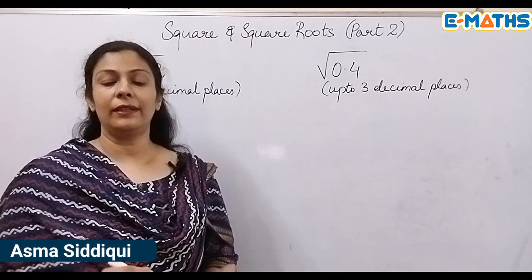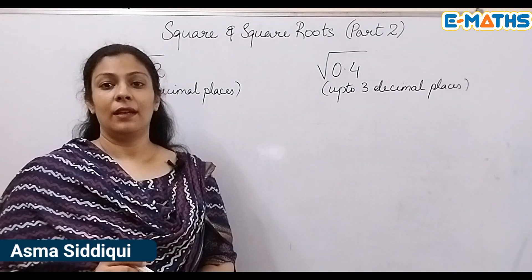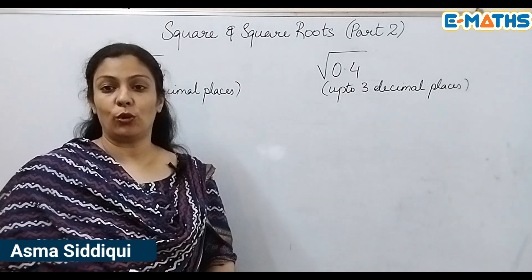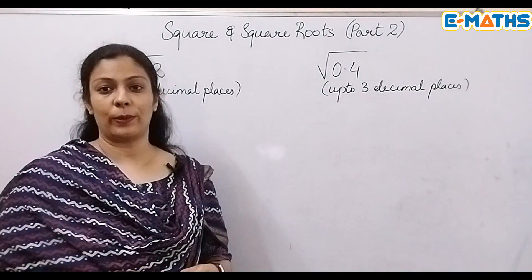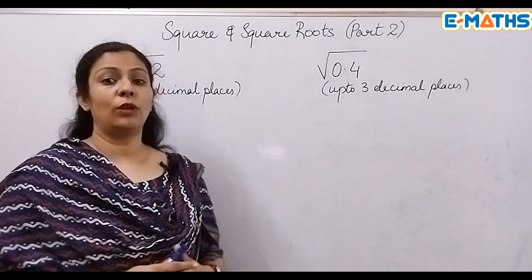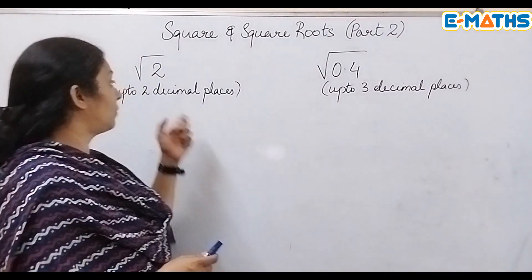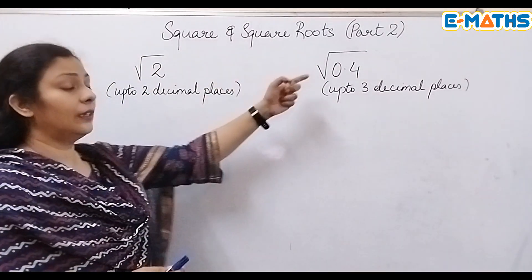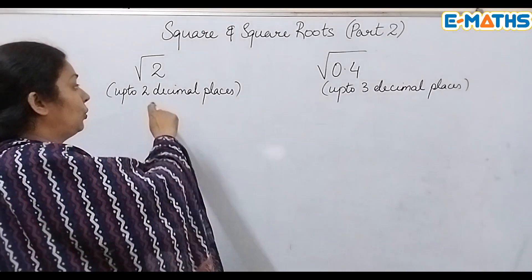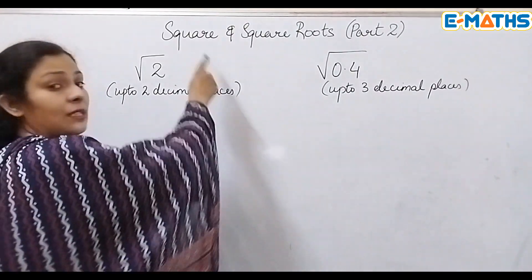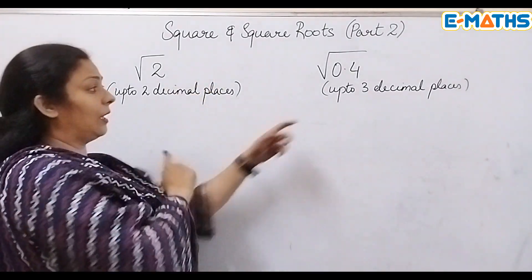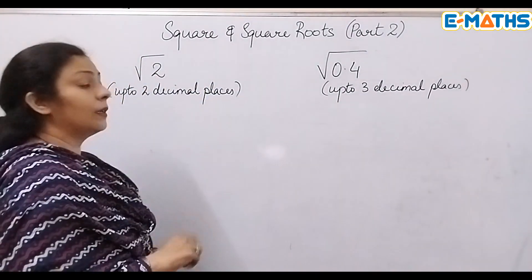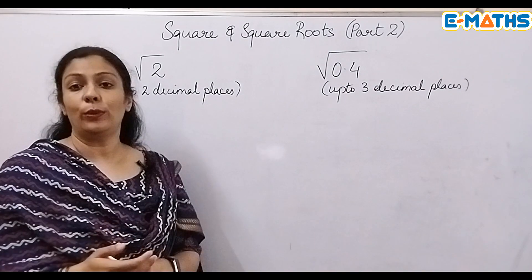Hello and welcome back to my channel EMATS. Today I have Part 2 of Square and Square Roots, where I'm going to tell you how to find square roots of a single digit number and a decimal number — up to two decimal places for the single digit number and up to three decimal places for the decimal number.